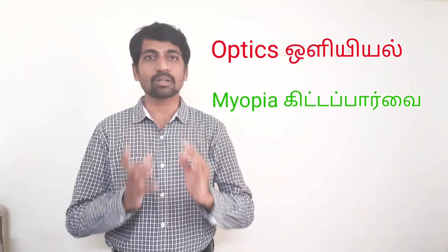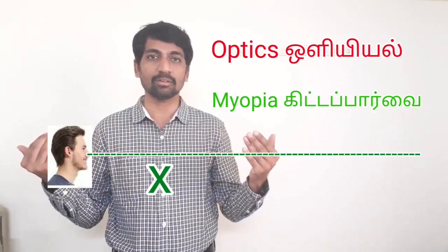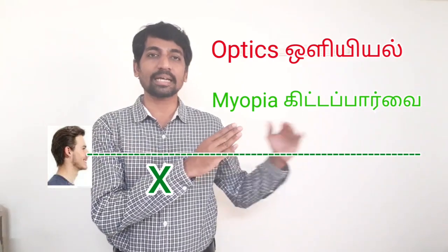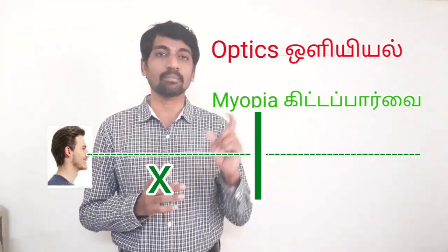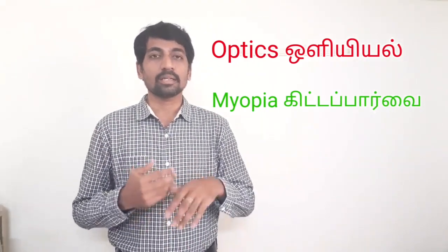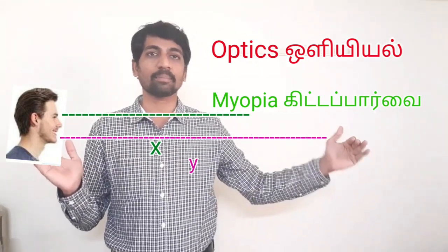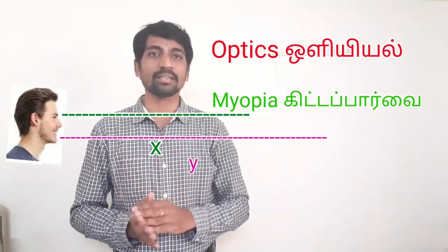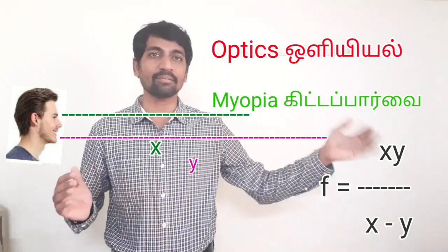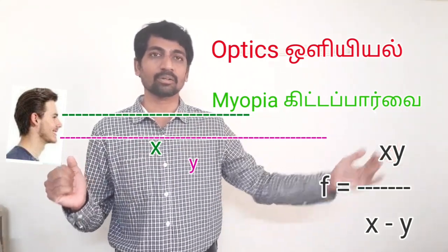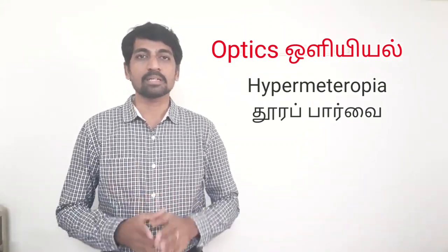For the concave lens, we calculate the focal length accordingly. The next defect is hypermetropia. The power of the lens is adjusted based on the required focal length to correct the vision.